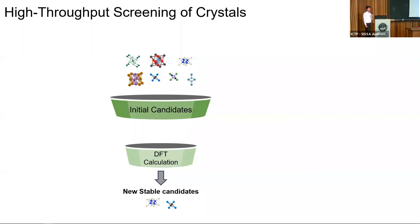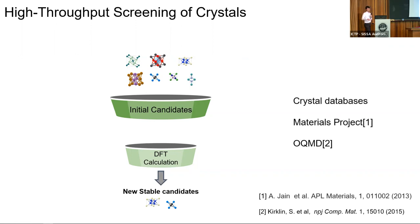What I'm interested in is using machine learning to start from a large set of material or crystal candidates, which you would then screen with a DFT calculation to find thermodynamically stable crystal structures. There are actually a lot of databases already available for this, such as Materials Project and OQMD, both of which have several hundred thousand structures already calculated.